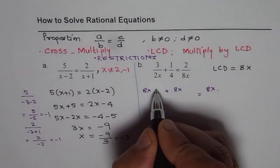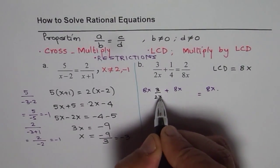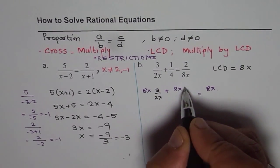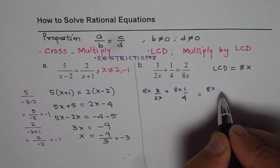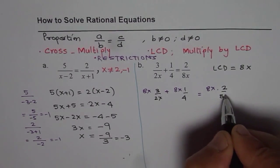So we will do 8x times the first term plus 8x times the second term equal to 8x times the third term. So it is 8x times 3 over 2x, 8x times 1 over 4, 8x times 2 over 8x.